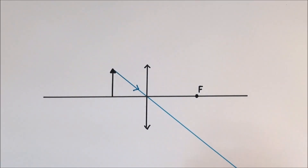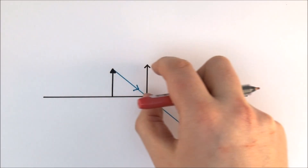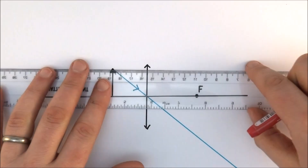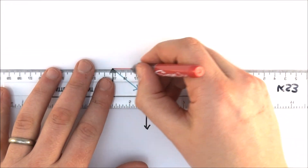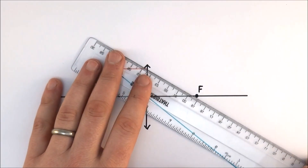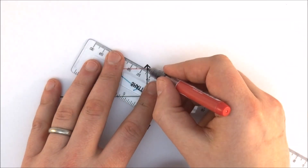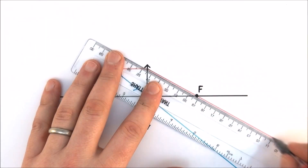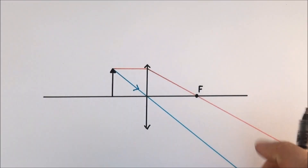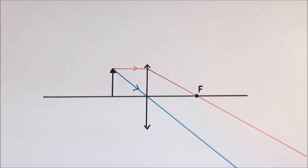The second ray of light comes from the top of the object and goes parallel to the principal axis, then through the focal point. What you'll start to see is that after the light goes through the lens and through the focal point, the two rays of light don't cross over — in fact they diverge.